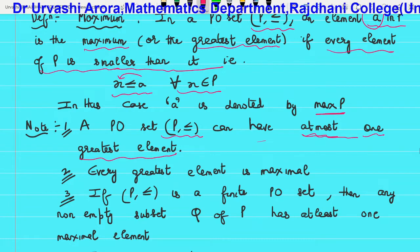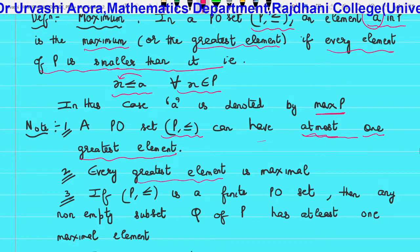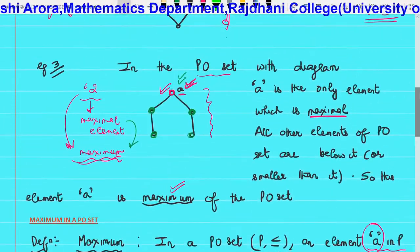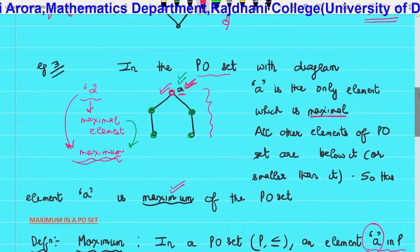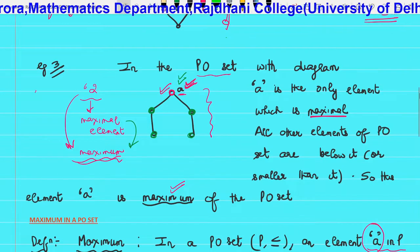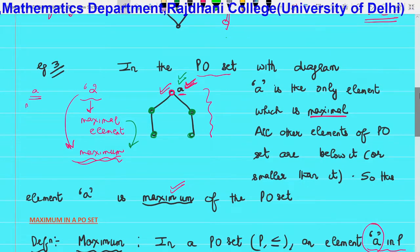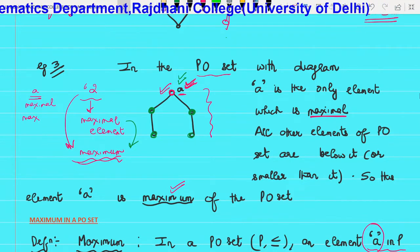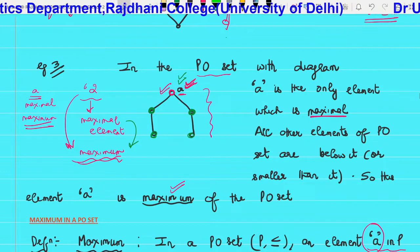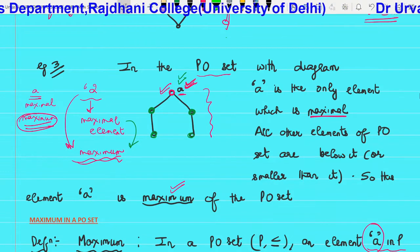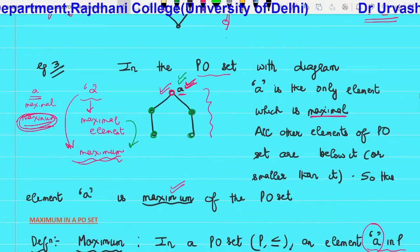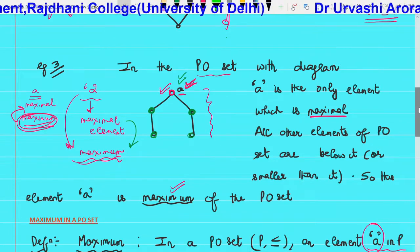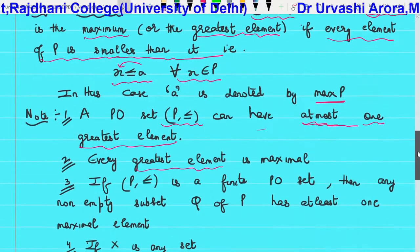Another note: every greatest element is maximal. We have seen this in Example 3 — that particular element A was maximal and also maximum because it was the only maximal element. So in a PO set, if there is a maximum or greatest element, then it is also maximal.